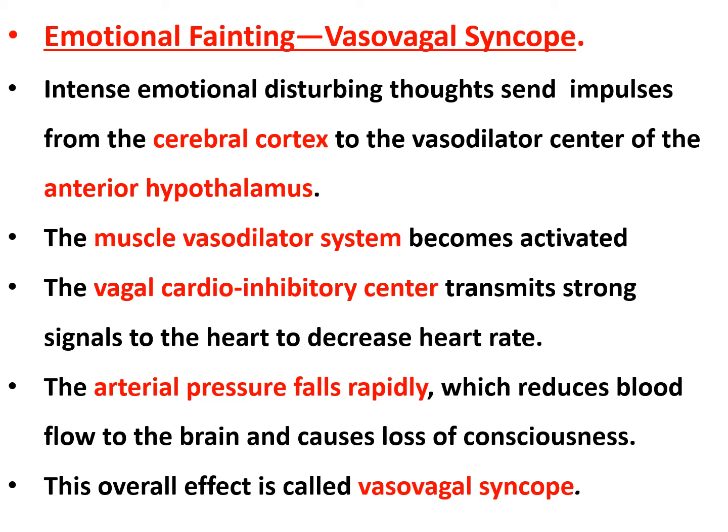At one point, the vagus decreases the heart rate; at another, the vasodilator system decreases the blood pressure. The pressure is insufficient to drive blood to the brain, and the decreased heart rate reduces the volume of blood reaching the brain per minute. This causes arterial pressure to fall rapidly, reduces blood flow to the brain, and causes loss of consciousness — overall called vasovagal syncope.